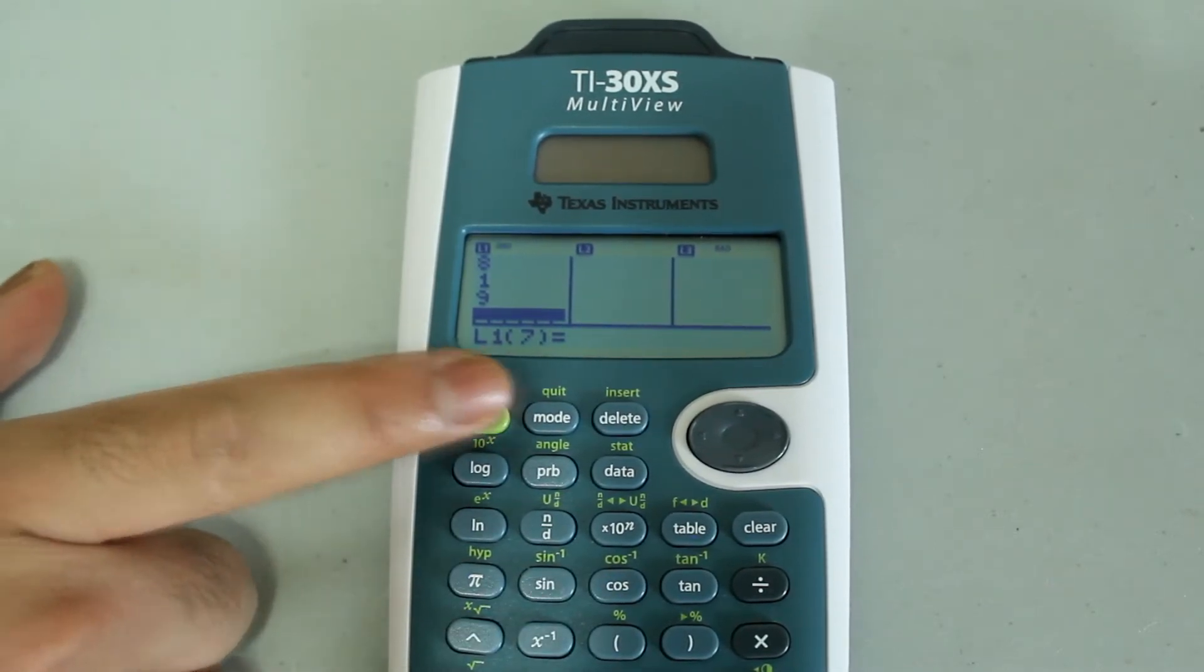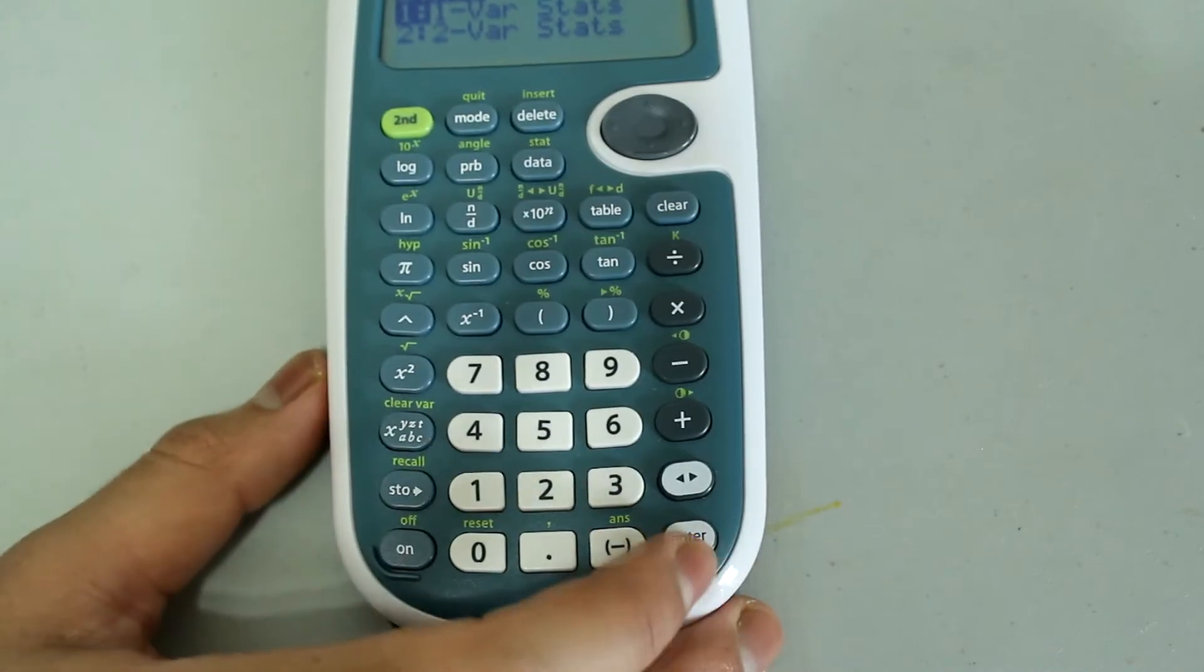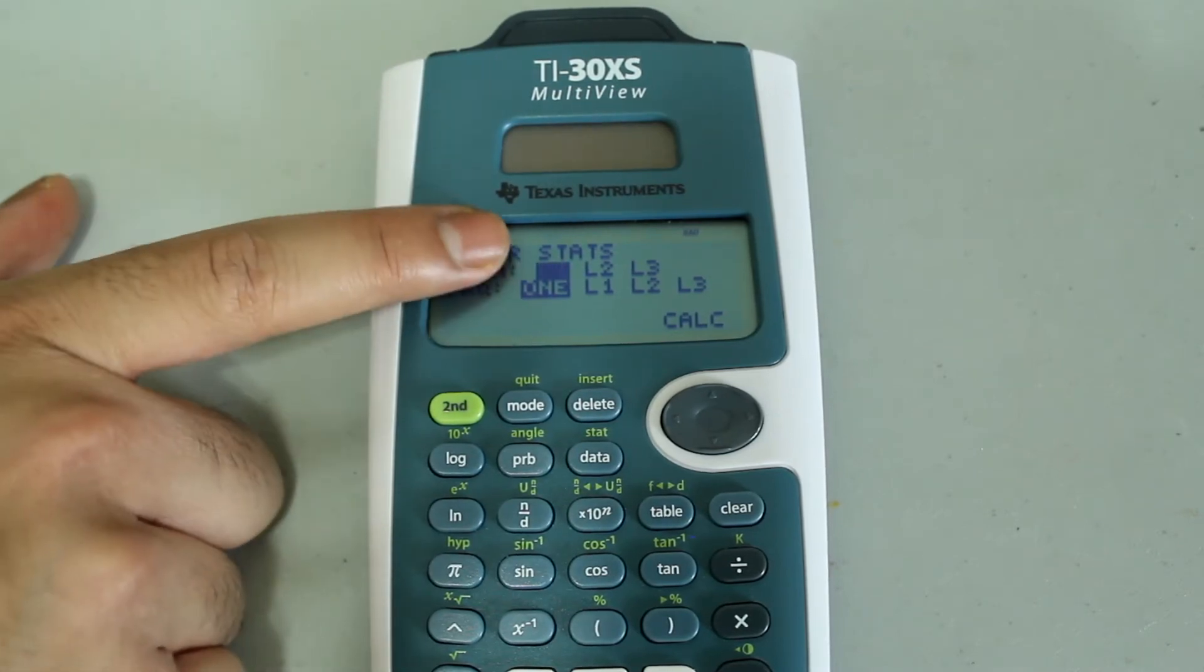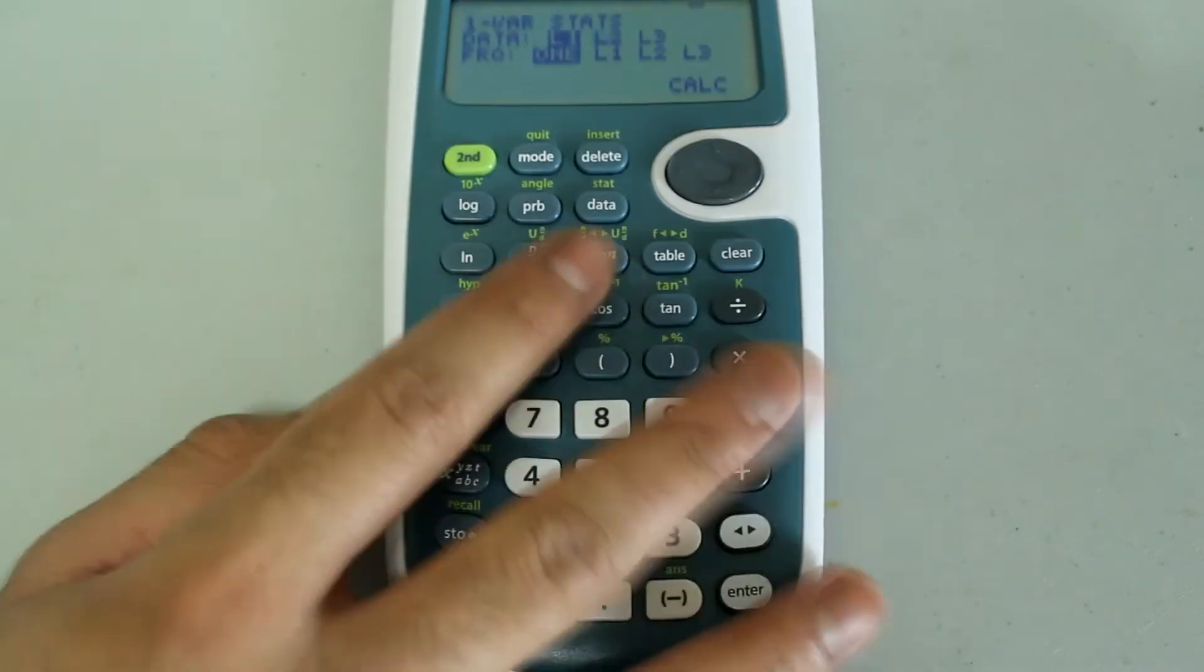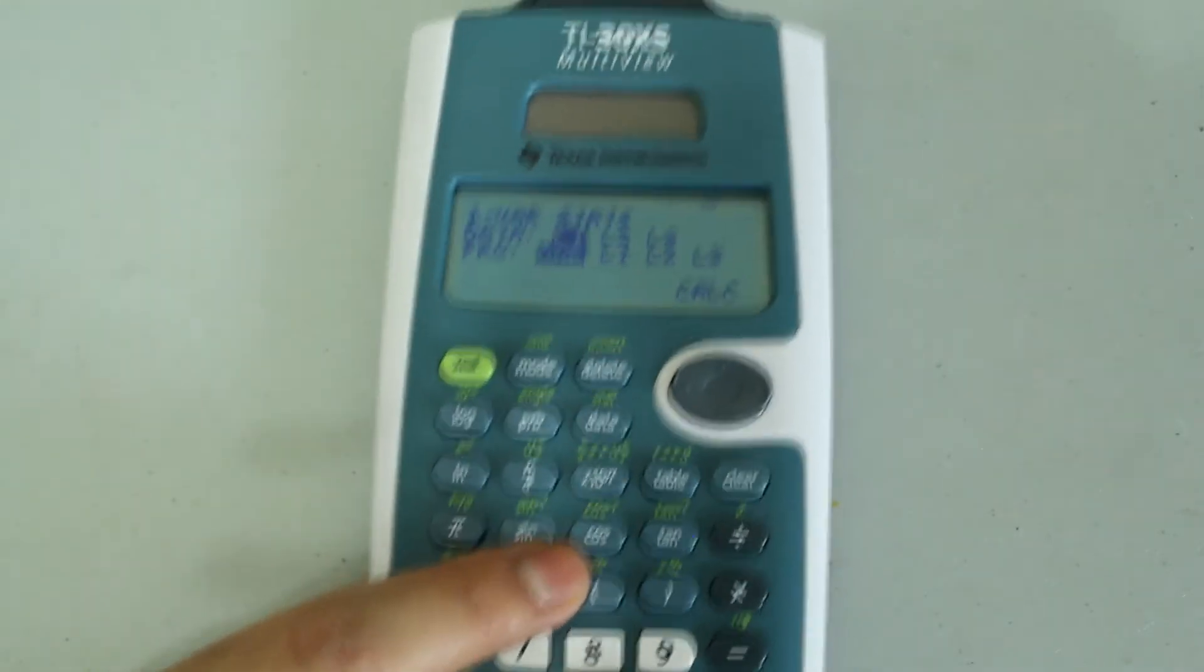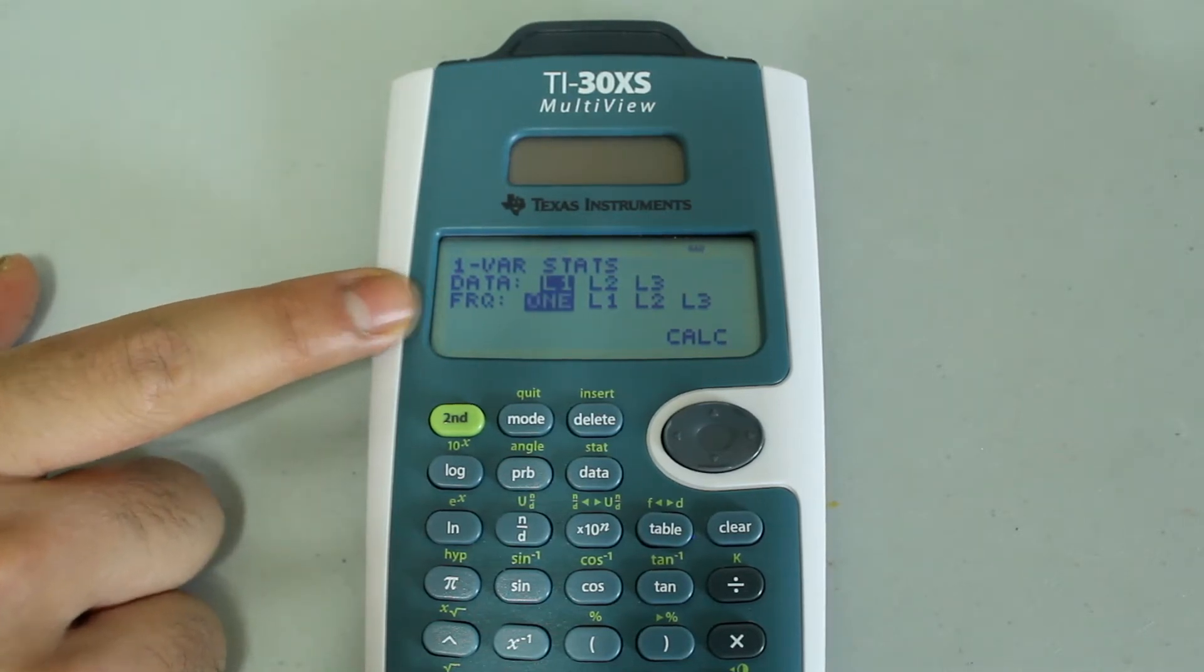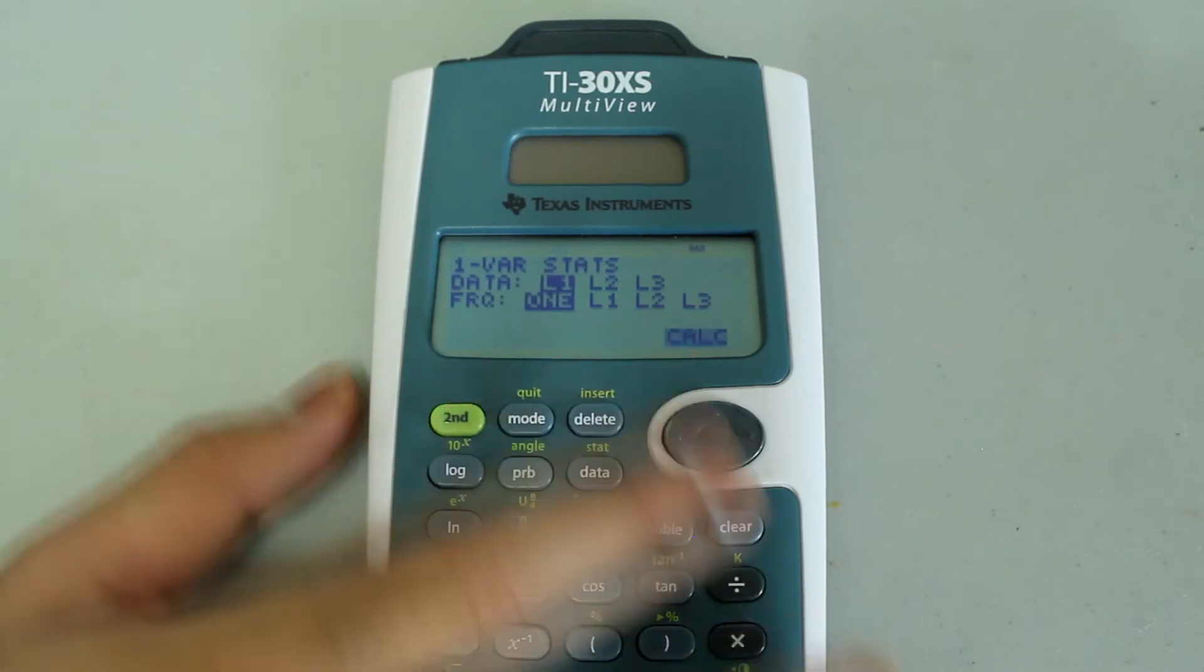I'm going to press second and the data button to select the stats option. And this comes up, and I'm going to select the one variable stats. So press enter, and this screen comes up. First, it asks which list the data appears in. For me, it's L1, but if your data appeared in L2, you could always just arrow over and then press enter to select L2. But for me, I need to have L1 selected. The frequency is 1, and that means each of my data points only appears once. So 2 appears once, 3 appears once, 5 appears once, and so on. There are no repeats. I don't have 2 copies of 2 in the data set, or 2 copies of 5. So the frequency is 1 for now, and we're going to play with this in just a little bit. And then afterwards, arrow down to the calculate option and press enter.